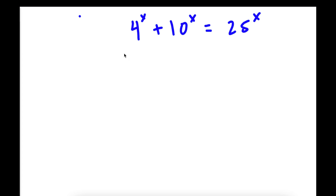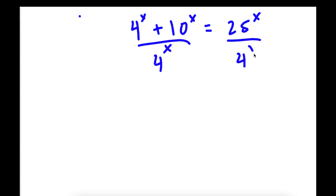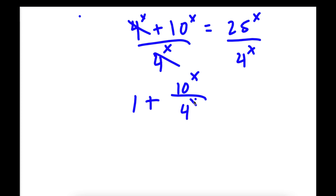What I'm first going to do is divide both sides by 4 to the power of x. So these two cancel out, and I have 1 plus 10 to the power of x over 4 to the power of x is equal to 25 to the power of x over 4 to the power of x.